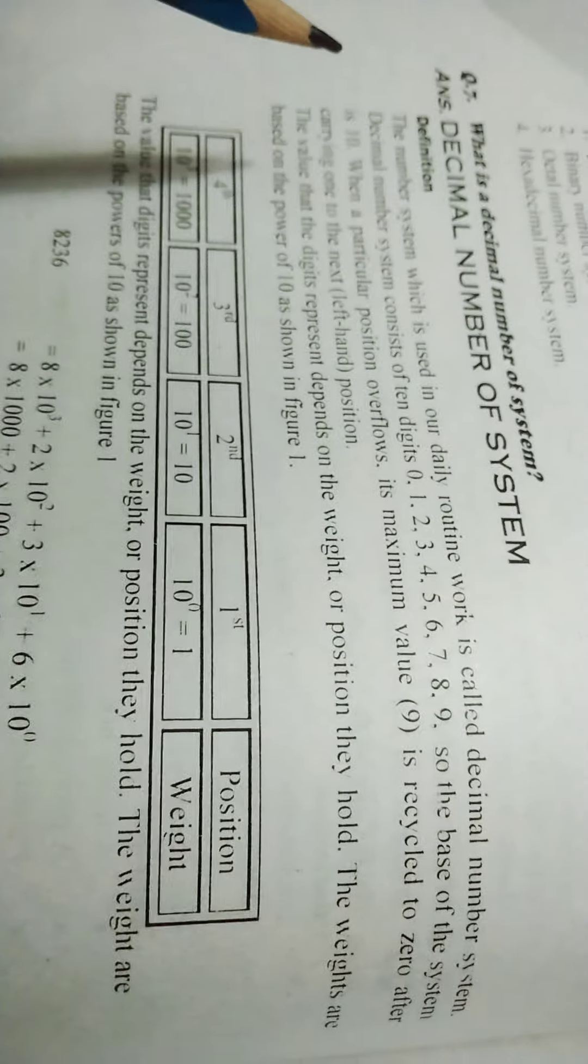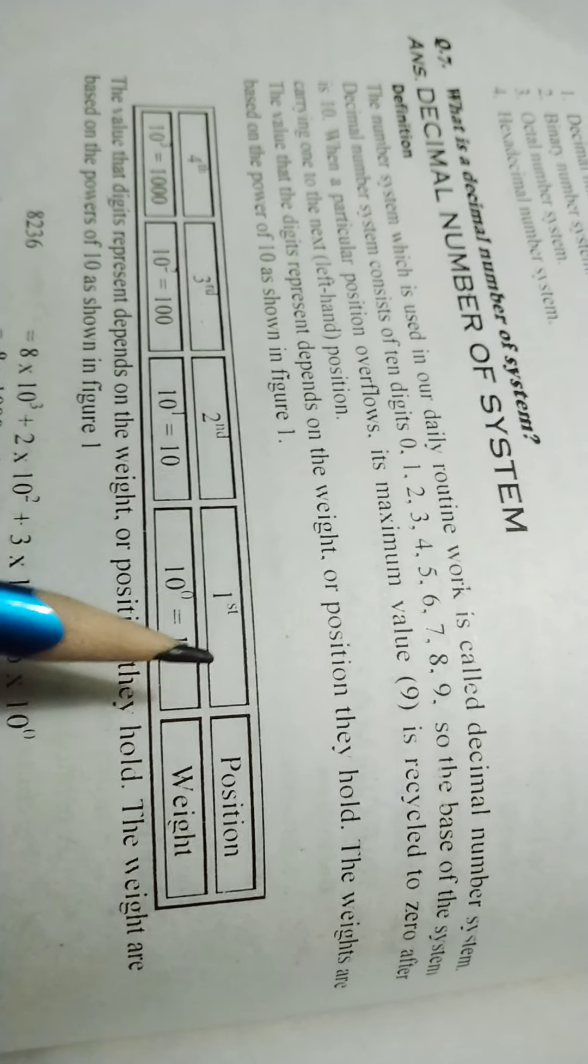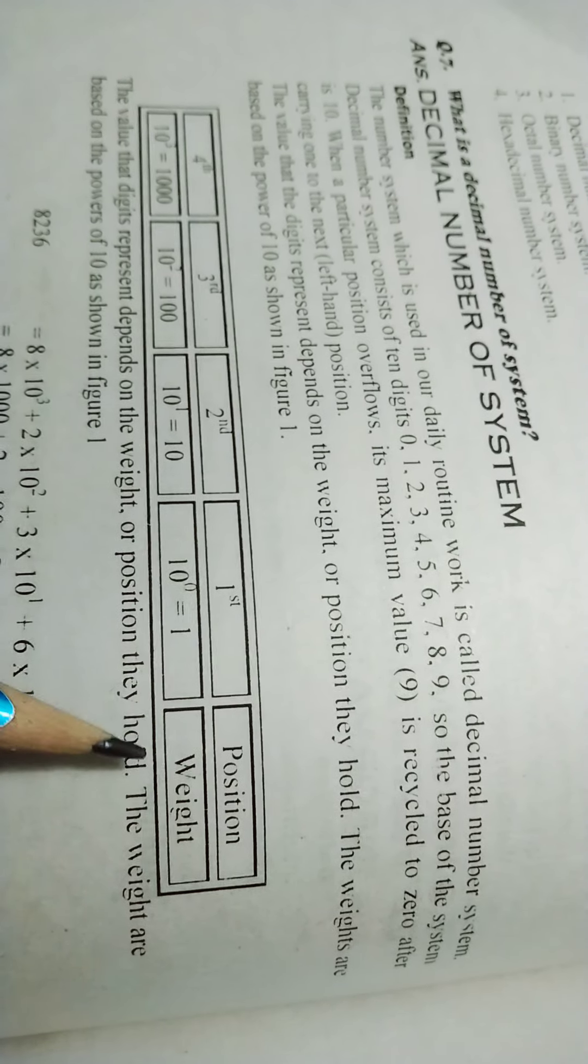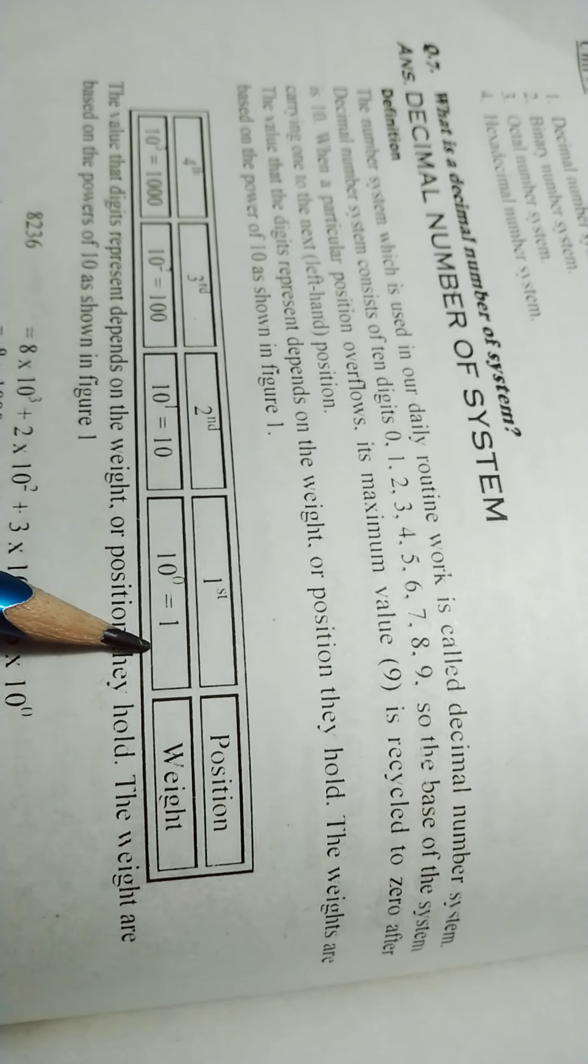In decimal number system, the first position is 10 to the power 0, which is equal to 1.